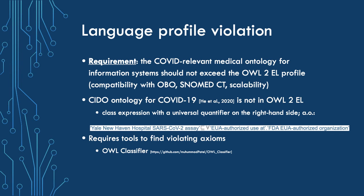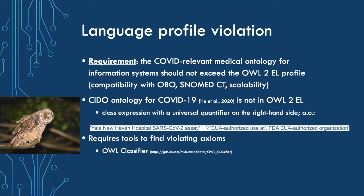The first illustration is on language profile violation. For instance, a reasonable hard requirement is that the ontology relevant for COVID has to stay within the AL2EL profile, so as to be roughly compatible with other OBO-related ontologies, with SNOMED CT, and to be scalable. Looking at one of those ontologies recently made available, the SIDO, it turns out the SIDO is not within the AL2EL profile. The main culprit is the use of universal quantification on the right-hand side of the subsumption. We used the ALT classifier to find those axioms, rather than browsing through the ontology manually.